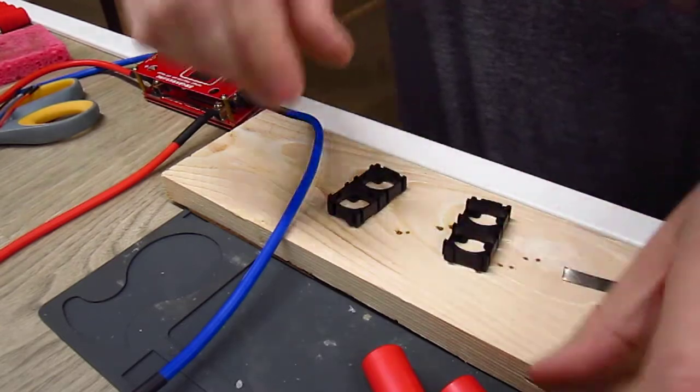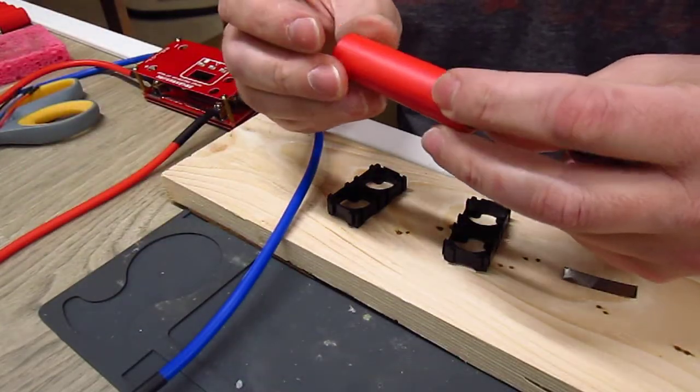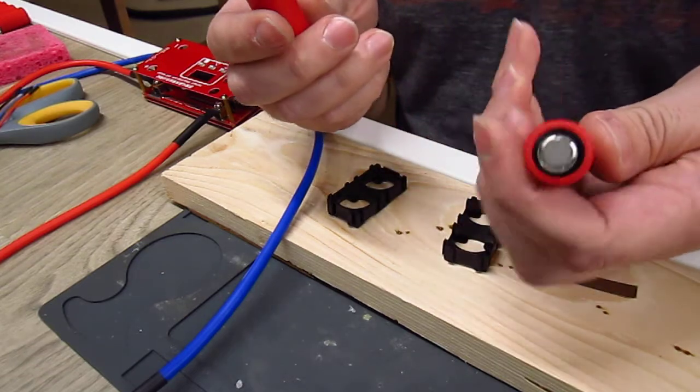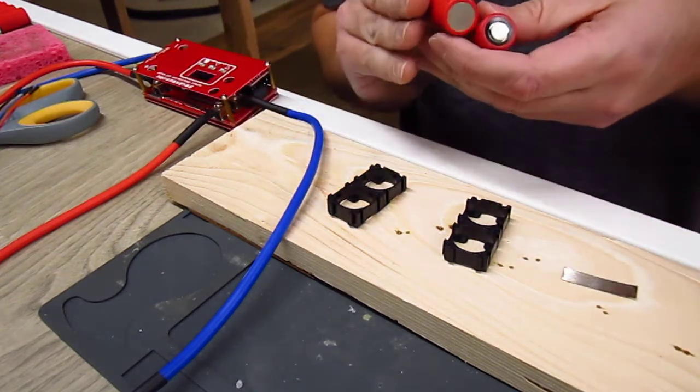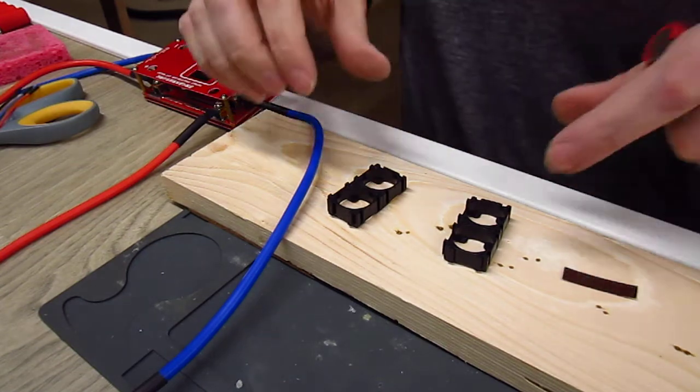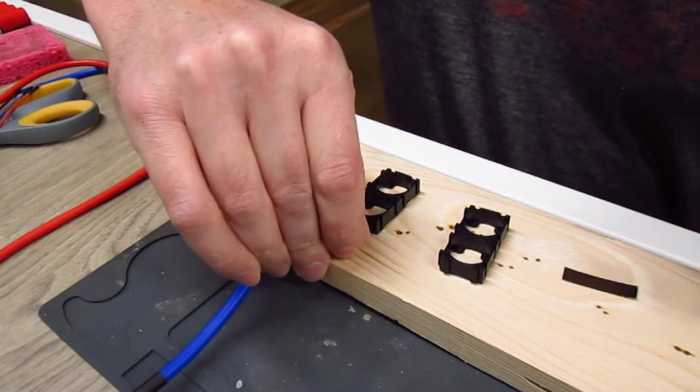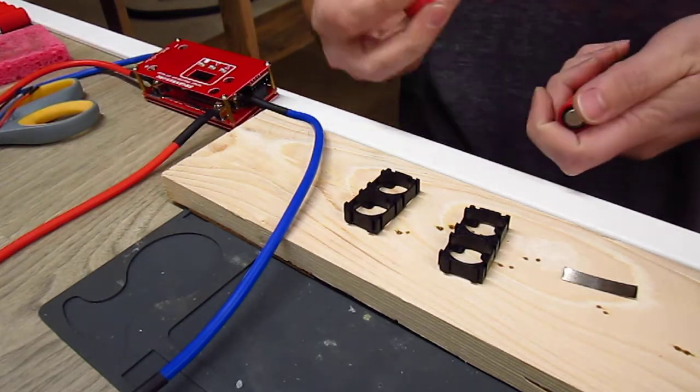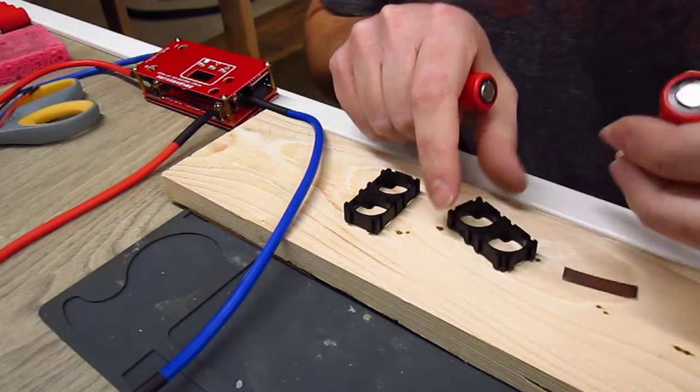We've got two Sanyo 3350 milliamp hour lithium ion cells. These have a 7 amp constant discharge. The purpose of making this pack is for a receiver battery in a nitro airplane. We'll be using a voltage regulator to bring it down to about 6 volts.